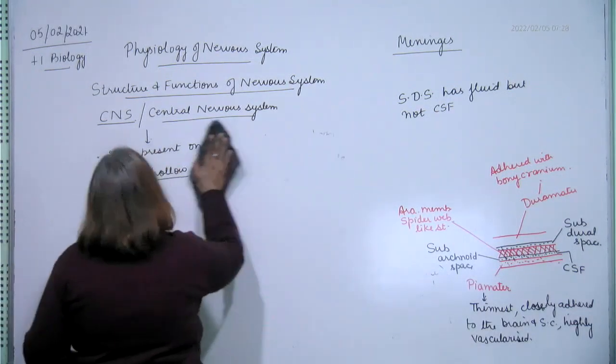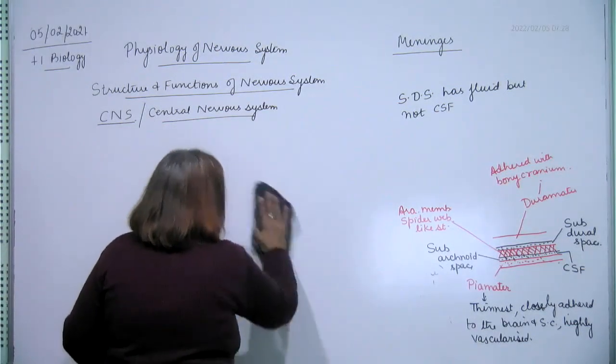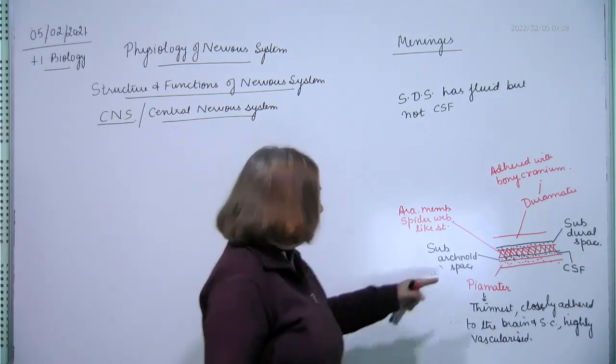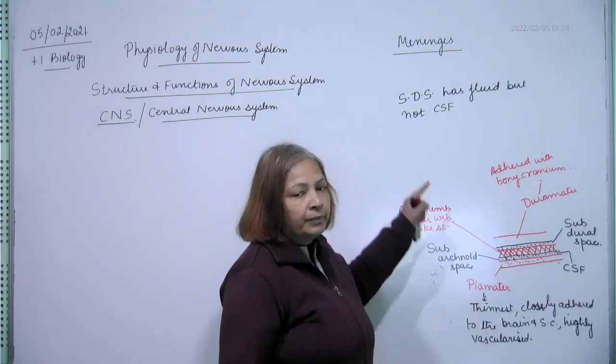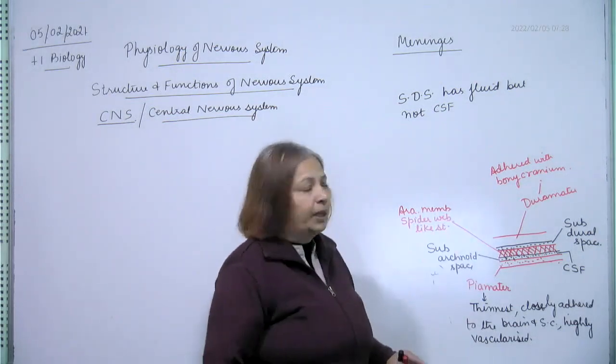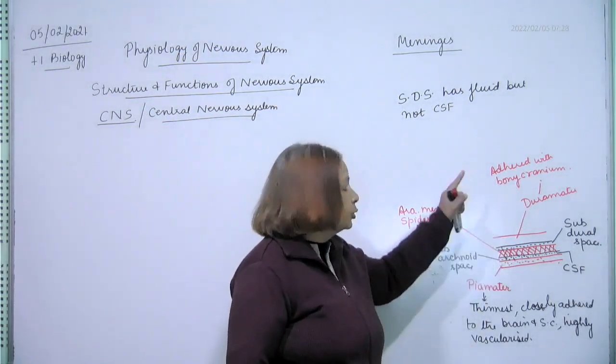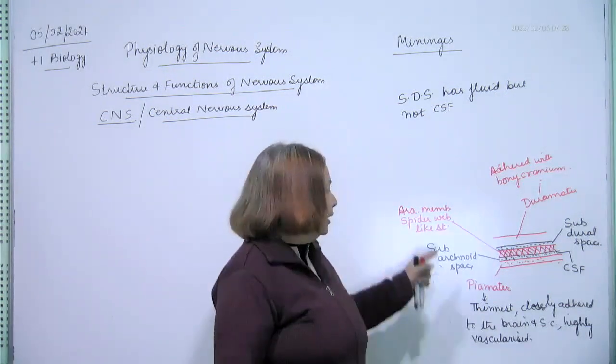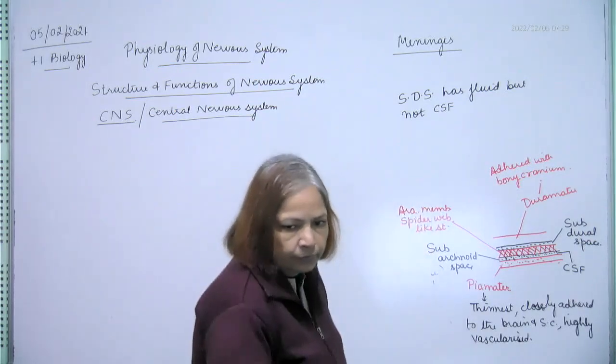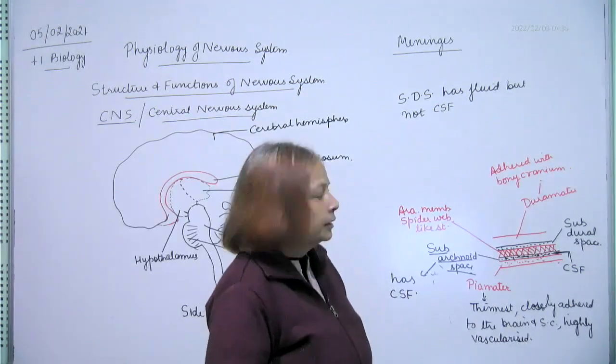Which nervous tissue? Brain or spinal cord. The durameter is adhered to the cranium, vertebral column. It is adhered to the cranium. Arachnoid membrane. Piameter is vascularized. Sub-arachnoid space and durameter has vascular supply. The durameter is maximum vascularized.